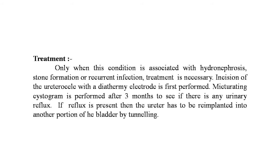Micturating cystogram is performed after three months to see if there is any urinary reflux. If reflux is present, the ureter has to be re-implanted into another portion of the bladder by tunneling. In advanced initial cases where the kidney is almost destroyed by recurrent infection, hydro- and pyonephrosis, nephroureterostomy should be considered.